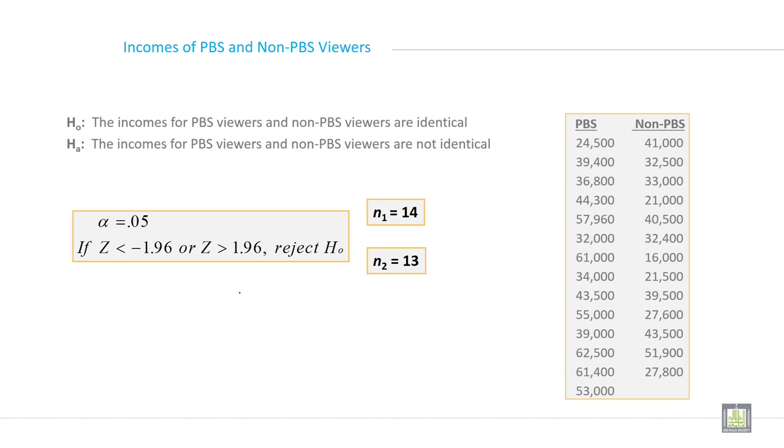So the null hypothesis in this case is the incomes for PBS viewers and non-PBS viewers are identical. This is the null hypothesis and the alternate hypothesis will be the incomes for PBS viewers and non-PBS viewers are not identical.